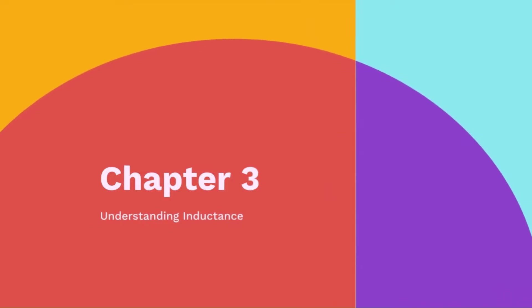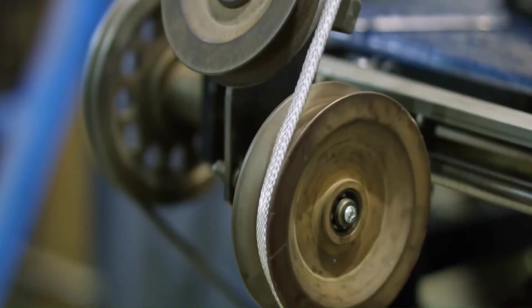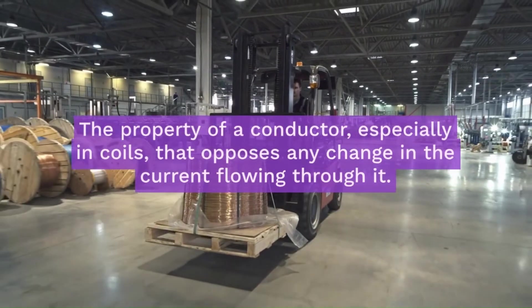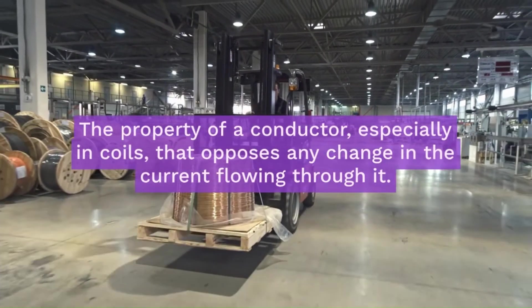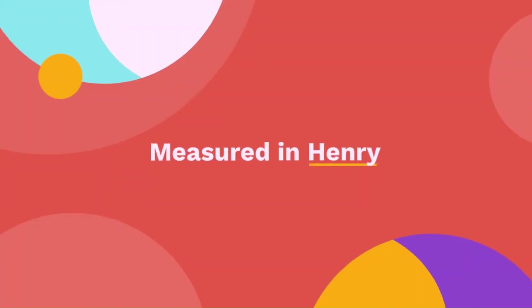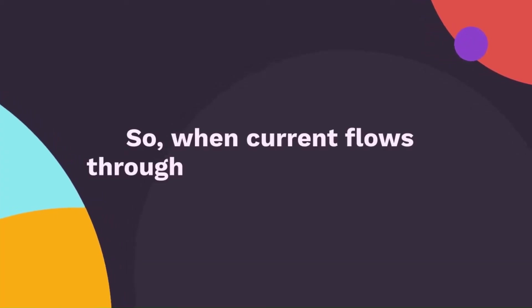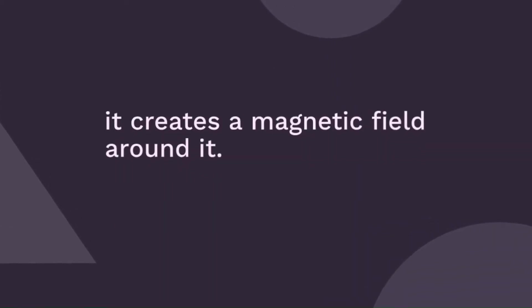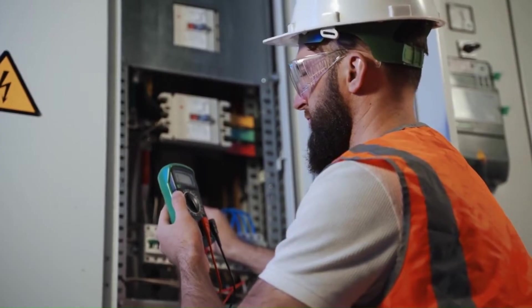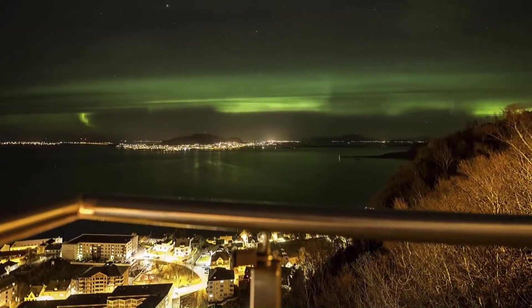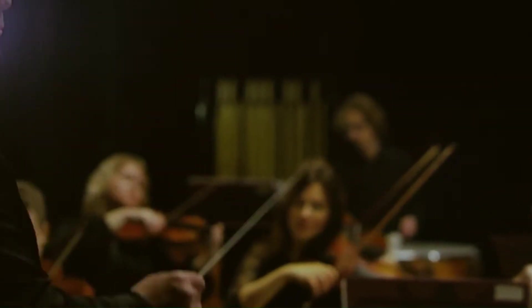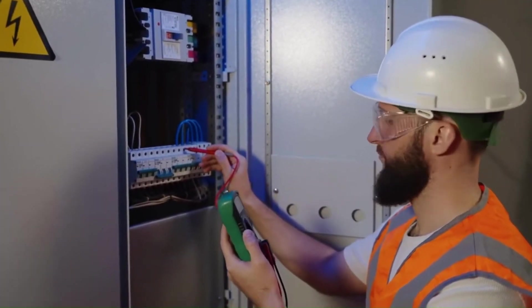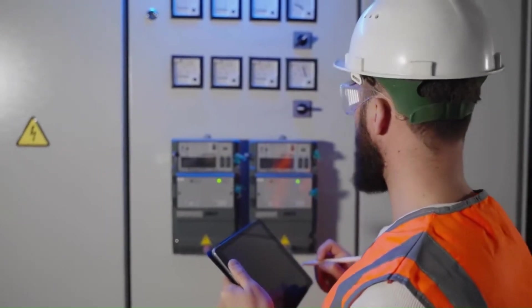Chapter 3: Understanding Inductance. Moving on to inductance, inductance is the property of a conductor, especially in coils that opposes any change in the current flowing through it. It is measured in Henry. When current flows through a conductor or a coil, it creates a magnetic field around it. The inductance depends on the number of turns in the coil, the area of the coil, and the material inside the coil, like if we have a core. Inductors are key components in AC circuits, often used to smooth out the current fluctuations.